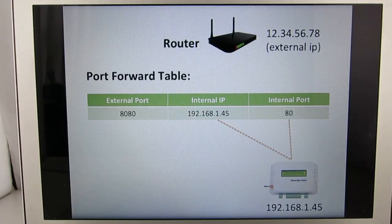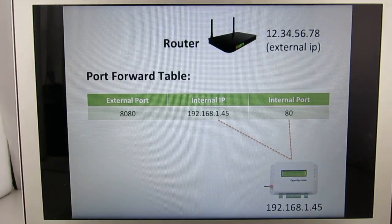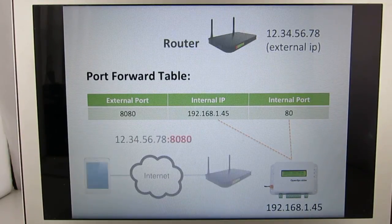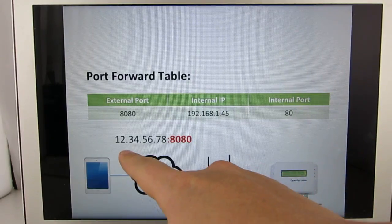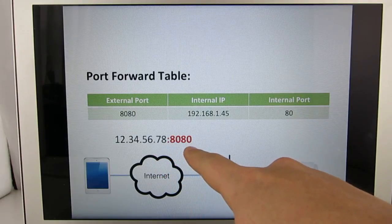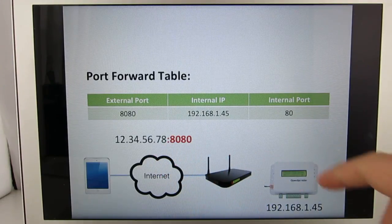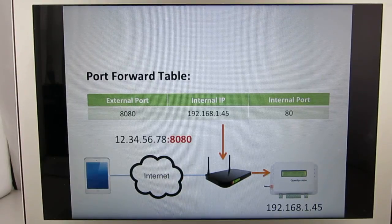Note that you cannot define the external IP because the external IP is given to you by your internet service provider and cannot be customized. Once this entry is configured, when you send a request from the outside using the external IP followed by colon 8080, the router will check its port forwarding table, find where to map this request, and then forward it to your OpenSprinkler.